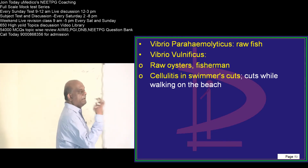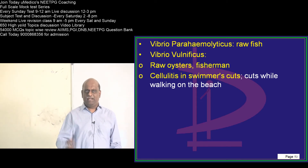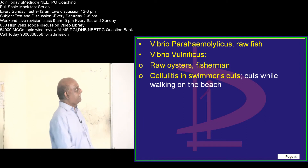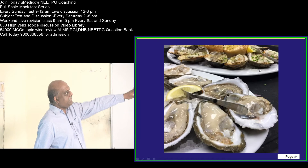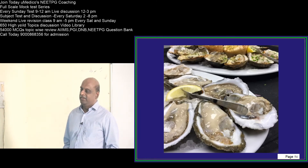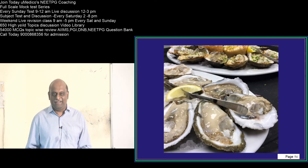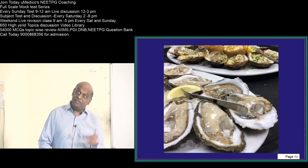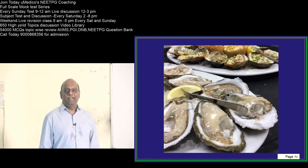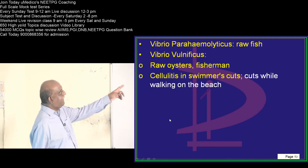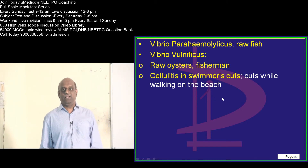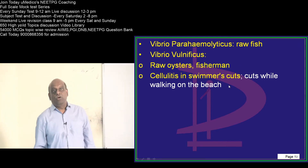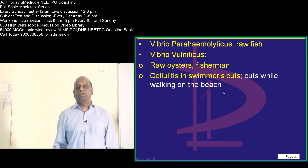Vibrio parahemolyticus — why remember? Raw fish consumption leads to it. Somebody ate raw fish and later developed a septicemic picture — think of parahemolyticus. Vibrio vulnificus — why remember? It is from raw oysters. If you eat raw oysters and the next day you are found septicemic, Vibrio vulnificus is what you should not forget. Swimmers who have small cuts can also get Vibrio vulnificus infection, so while walking on the beach make sure you don't have cuts.